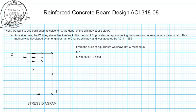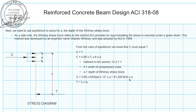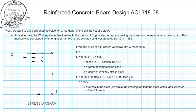From ACI section 10.2.7.1, using the Whitney stress block approximation, the compression force is 0.85 times f'c times b times a, where b is the width of the compression zone and a is the depth of the Whitney stress block. That gives us C = 0.85 × 6,000 psi × 12 inches × a, which equals 61,200 pounds per inch times a. The tension force equals the stress in the steel at failure times the area of steel. We're going to assume that the stress in the steel equals the yield stress — we will check this later.